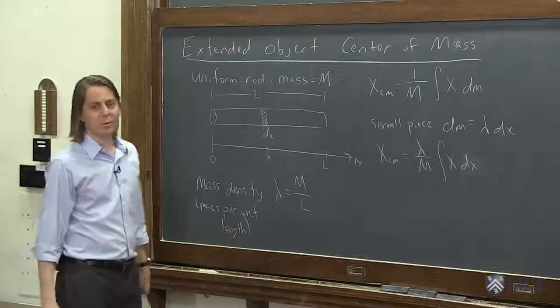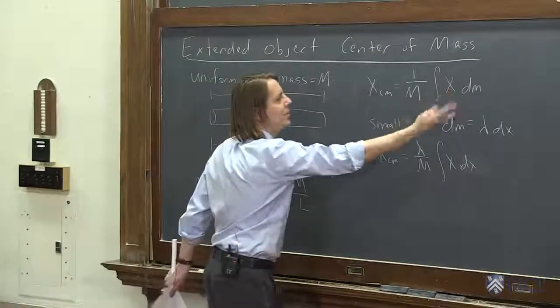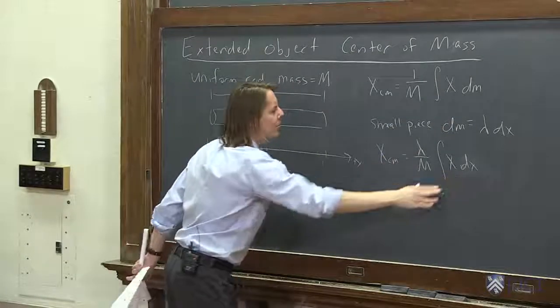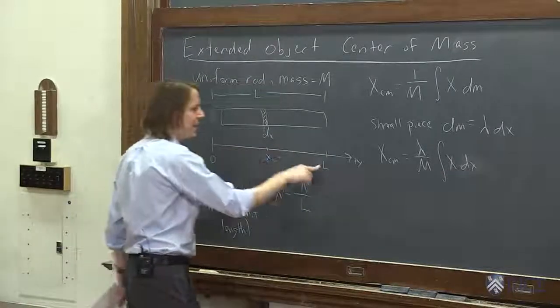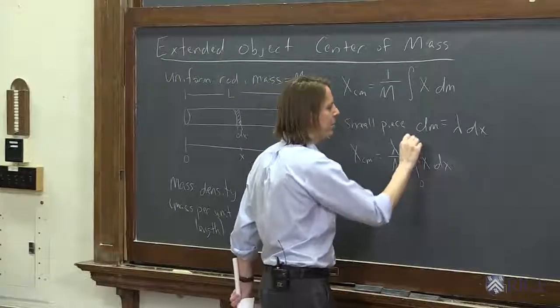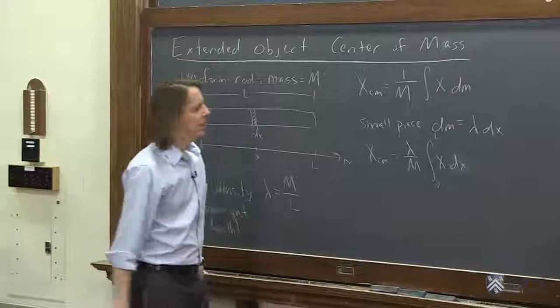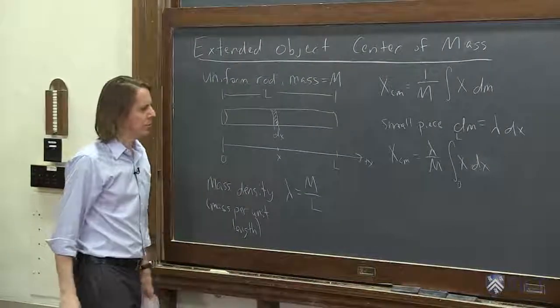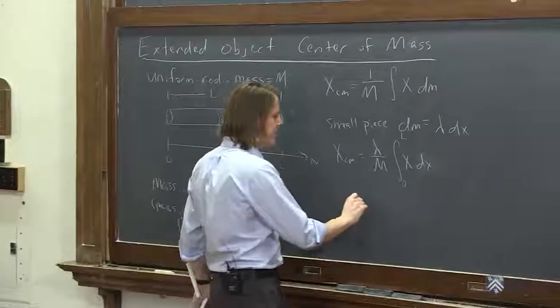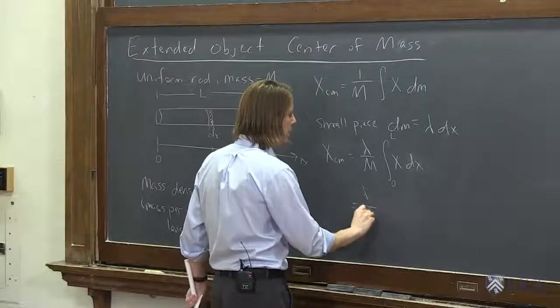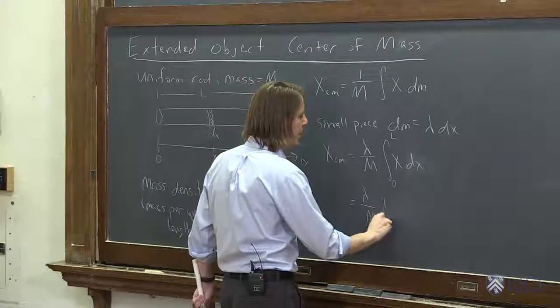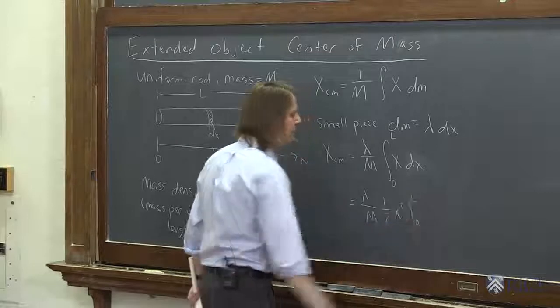Now that we're in terms of x, from the origin to L. So we're integrating from 0 to L. So there's an integral that we can do here. So this must be lambda over M, and this is 1 half x squared evaluated from 0 to L. So if we evaluate that at L, it's 1 half L squared, and 0 is just 0.